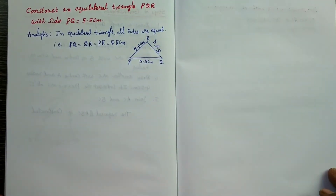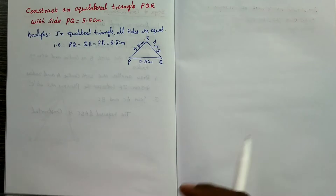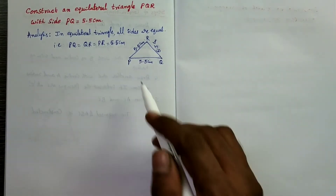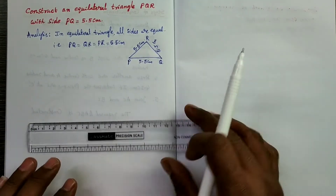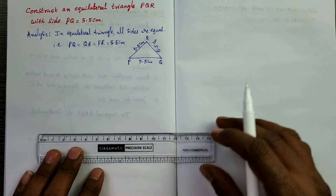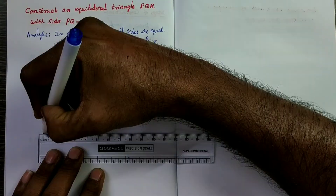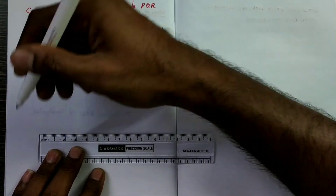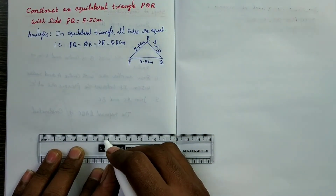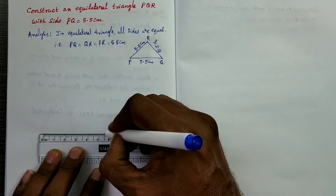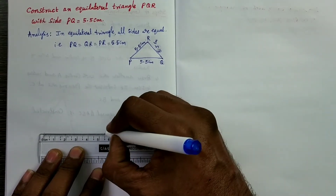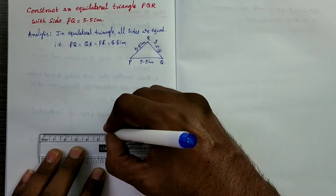Let us go to the original construction. Take PQ as the base, that is 5.5 centimeters. Take a scale, keep one point at 0 and mark another point at 5.5. Take another point at 5.5 and join them.